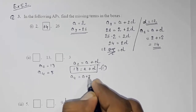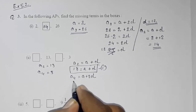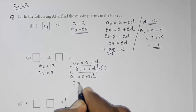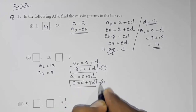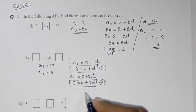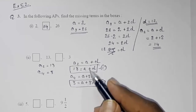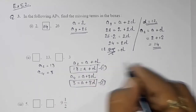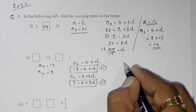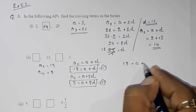From a4, we get: a + 3d = 3. This is equation number 2. Both are linear equations with two unknowns, so we can solve by elimination, substitution, or cross multiplication. I am going to solve by elimination: 13 = a + d and 3 = a + 3d.